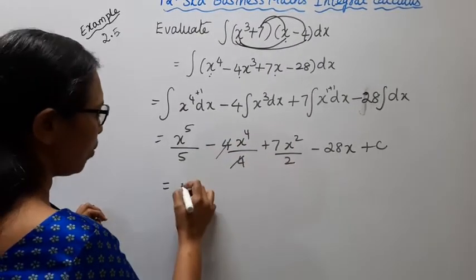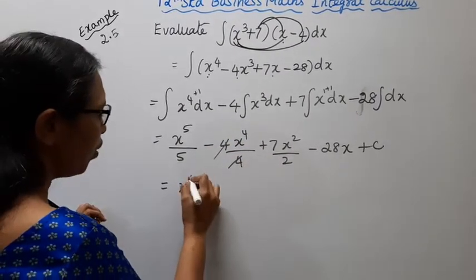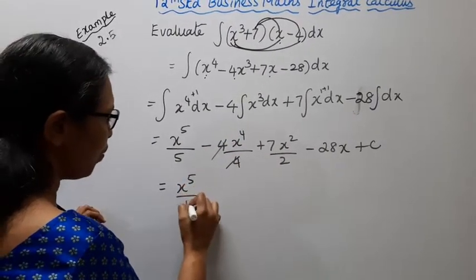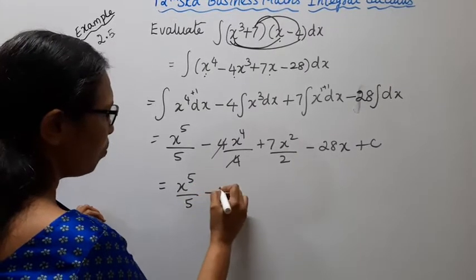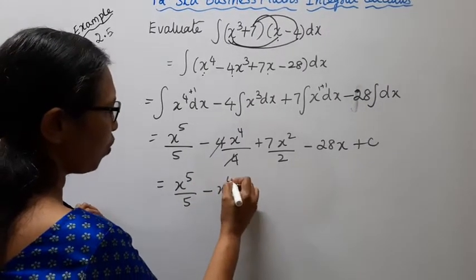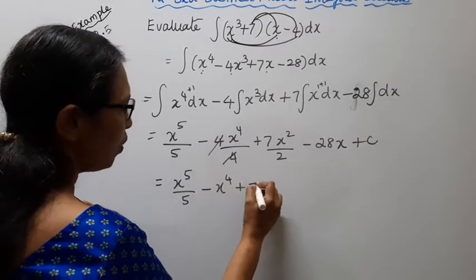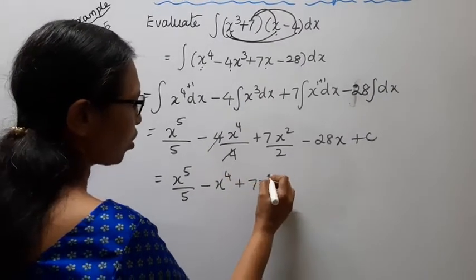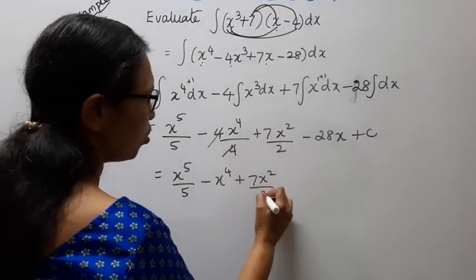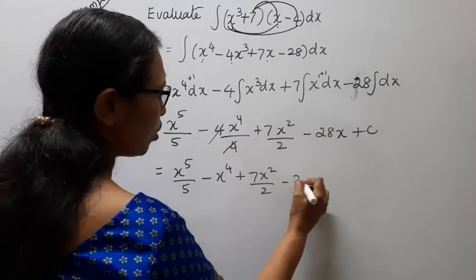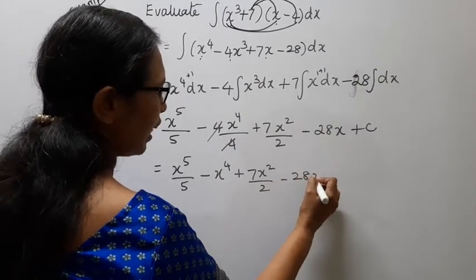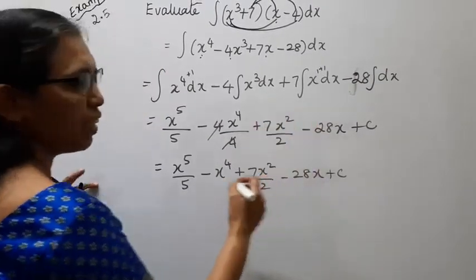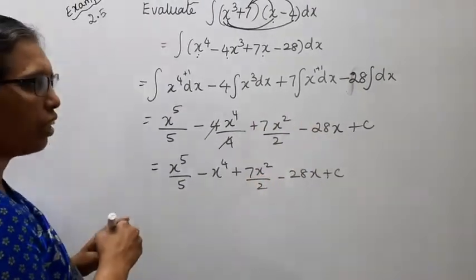The final answer is: x power 5 by 5, minus x power 4, plus 7x power 2 by 2, minus 28x, plus c. This is the answer.